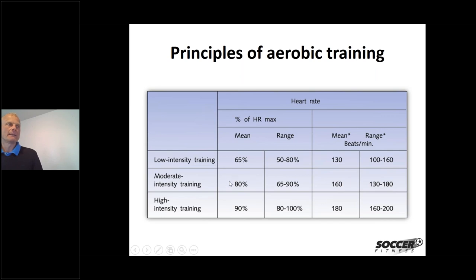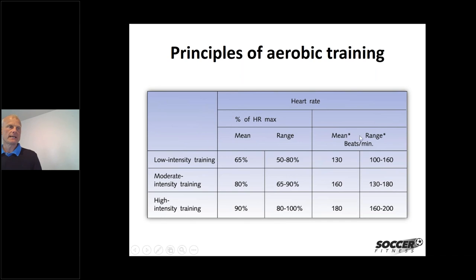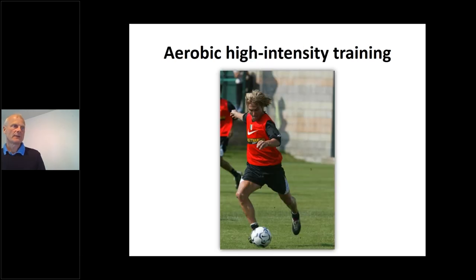For moderate intensity training we aim at 80% of maximum heart rate, while aerobic high-intensity training targets around 90%. Using an example of a player with a maximum heart rate of 200: a heart rate of 160 is acceptable for moderate intensity, but for aerobic high-intensity training the player needs to average around 180. We use a range because there is huge variation in heart rate during any game, depending on where the player is in relation to the ball. You can obtain maximum heart rate values from the yo-yo test, where players reach maximum heart rate at the end.